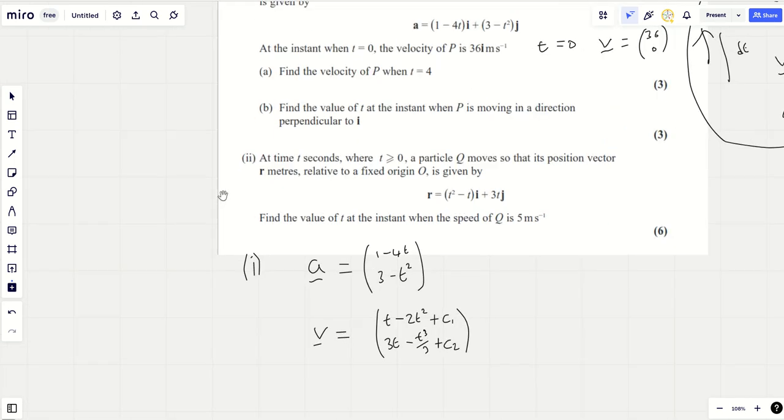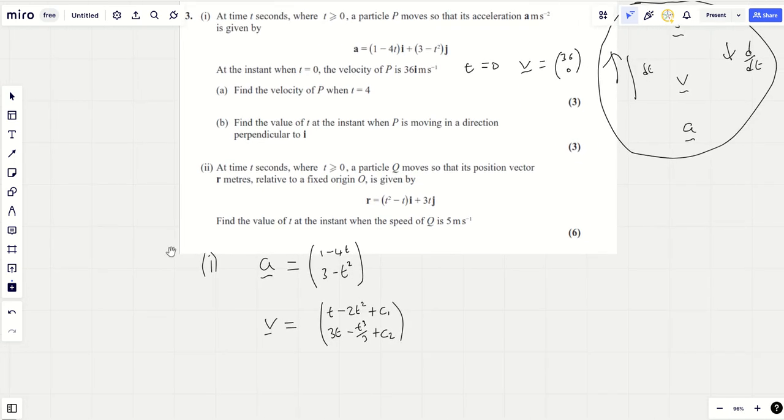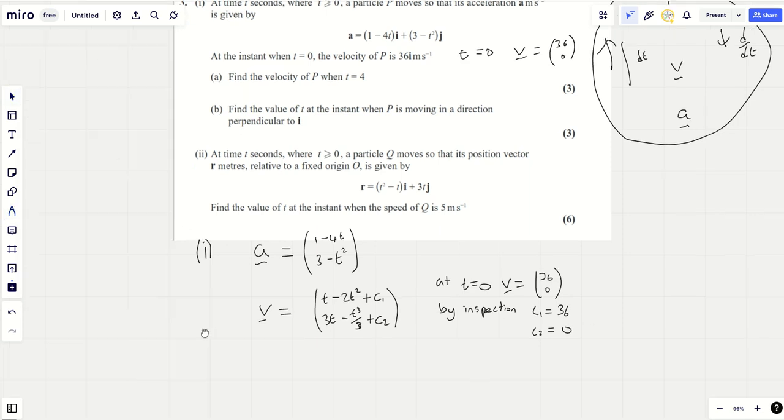That's going to give us T minus 2T squared plus C1 and 3T minus T cubed over 3 plus C2 for our velocity vector. Now there's lots of marks available for this. We do need to find C1 and C2, but we can find that because at T equals 0, V equals 36, 0. You can see here T is 0, that's going to give me 0, 0. So by inspection then, C1 is 36 and C2 is going to be equal to 0.